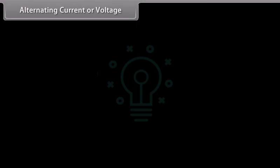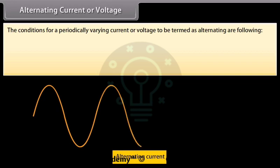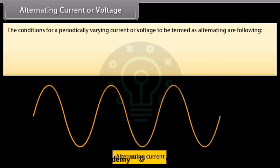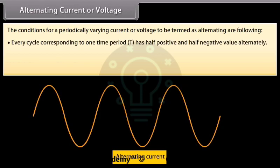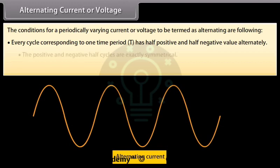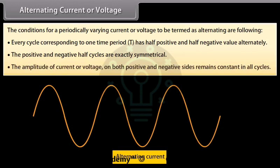The conditions for a periodically varying current or voltage to be termed as alternating are: every cycle corresponding to one time period has half positive and half negative value alternately; the direction of current reverses after every half cycle; the polarity of potential difference reverses after every half cycle; the positive and negative half cycles are exactly symmetrical; and the amplitude of current or voltage on both sides remains constant in all cycles.